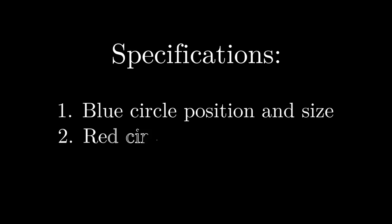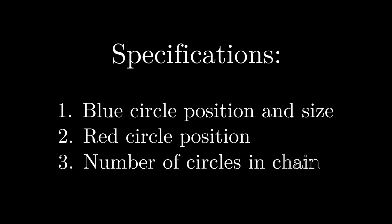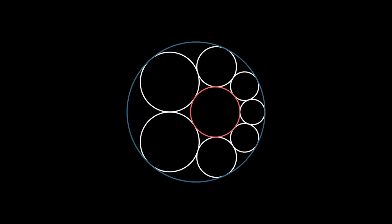How much information do we need to construct such a pair? We need to specify three things to uniquely define a pair of red and blue circles. One, the size and position of the outer blue circle. Two, the position of the center of the inner red circle. And three, the number of circles that we want in the chain.